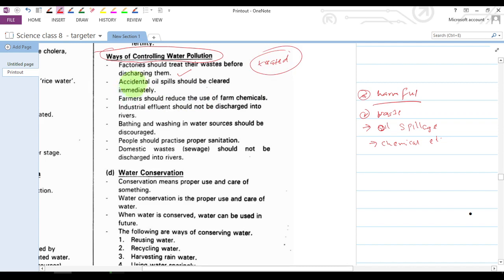Also, accidental oil spills should be cleared immediately. When oil spills on water, it should be cleared immediately because the oil will float on water, and when it floats it is possible to clear it so that we can save the aquatic life of the animals that live in the water.